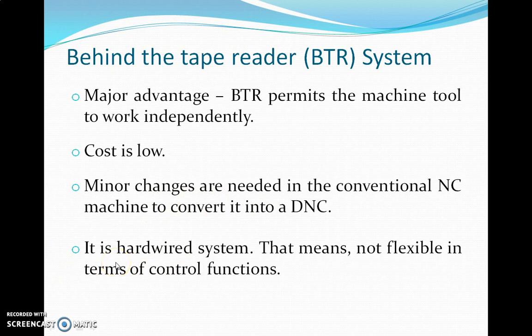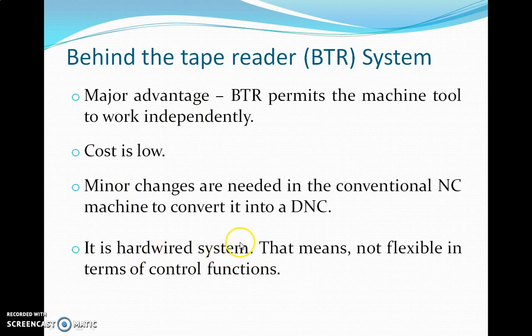BRT is a hardware system because the NC controller has not been removed. It contains hardware units, which means the machine is not flexible in terms of control functions — it can only perform straight contours or at most circular contours.